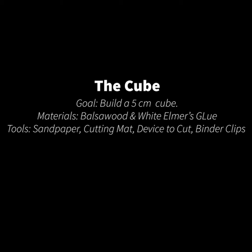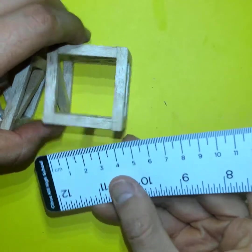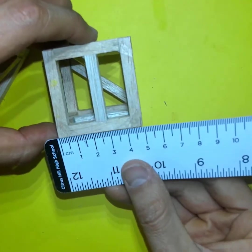Hey welcome back, so for this video we are going to make a cube out of balsa wood and white Elmer's glue. Notice that the dimensions will be 5 centimeters by 5 centimeters by 5 centimeters, and we'll only be using the tools listed here. So try it out after watching the video.